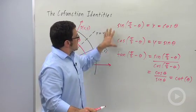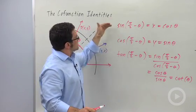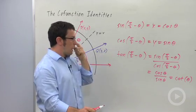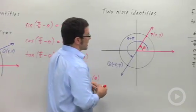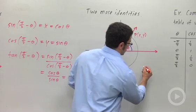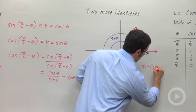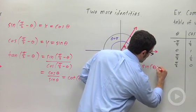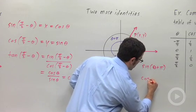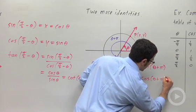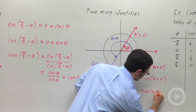This is an identity that's true for all six trig functions, but I just need them for sine, cosine, and tangent. The other identities I need to prove are identities for sine of theta plus pi, cosine of theta plus pi, and tangent of theta plus pi.